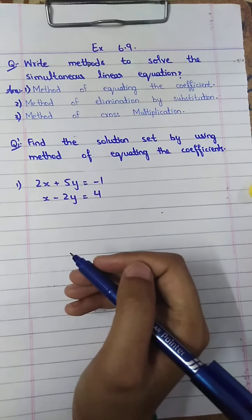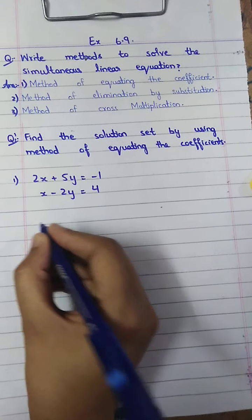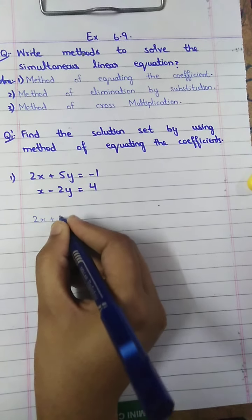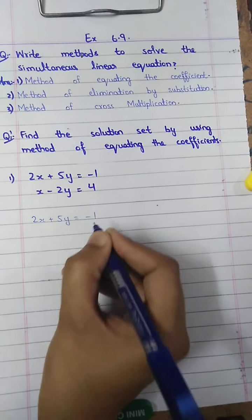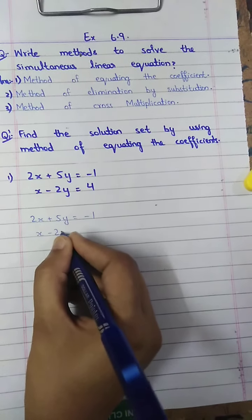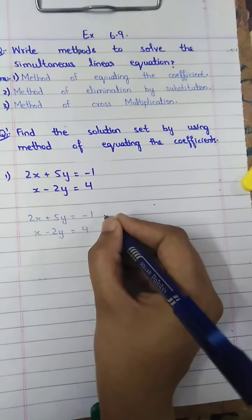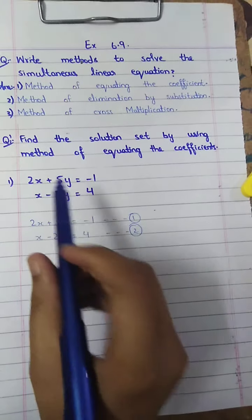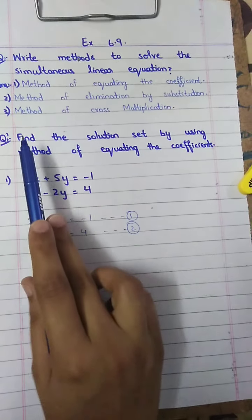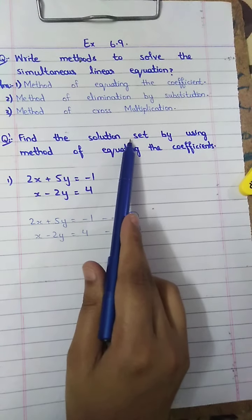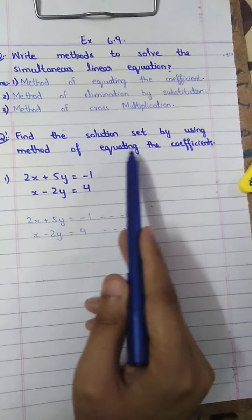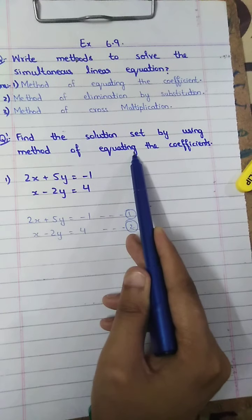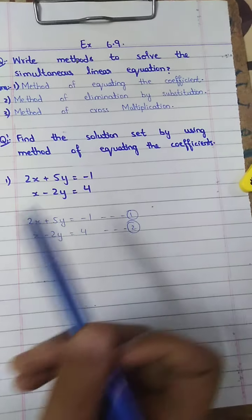This is our first method to solve simultaneous linear equations. In this question, the first step is to create and label the equations with numbers. Equating the coefficients means making the coefficients equal to each other.